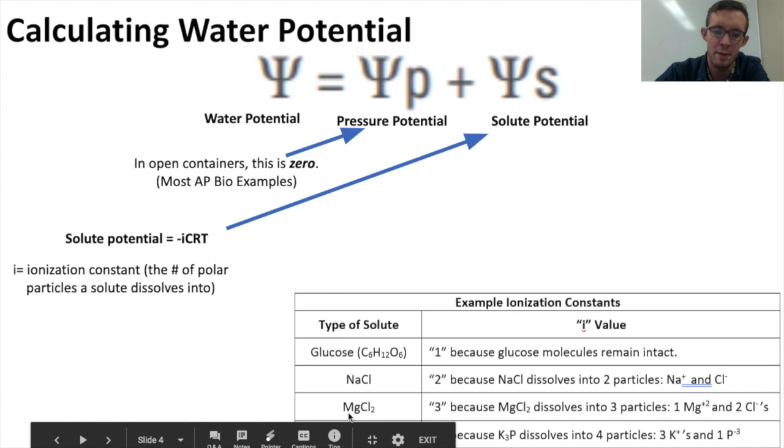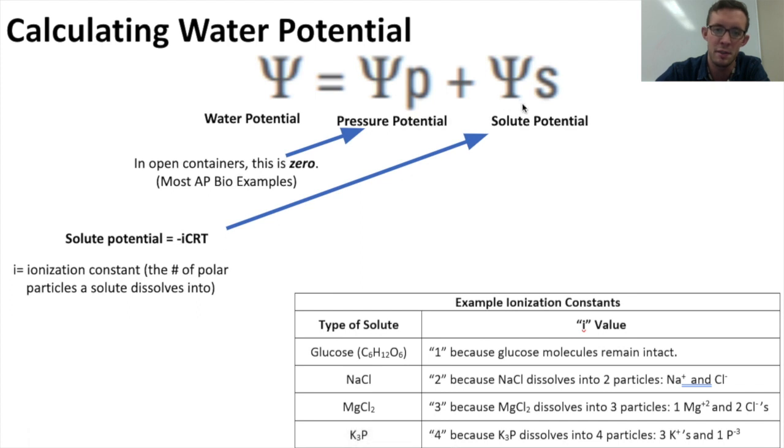Magnesium chloride, meanwhile, if you had a magnesium chloride solution, this would have an I value of 3 because magnesium chloride dissolves into three separate particles, one positive magnesium cation and two negative chlorine anions. So that's what the I value stands for in the solute potential.